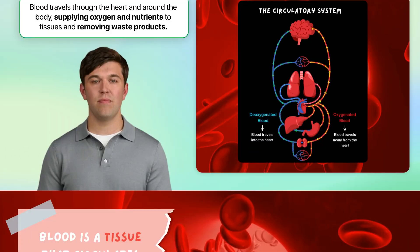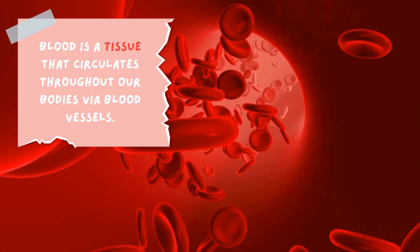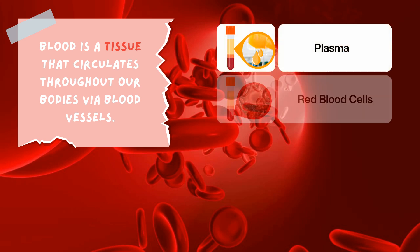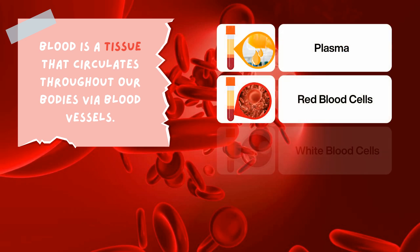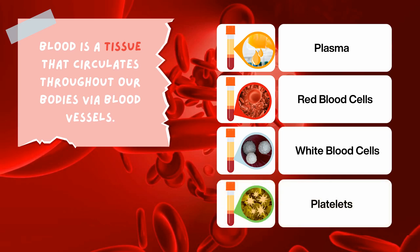Let's get started. Blood is a tissue that circulates throughout our bodies via blood vessels. It performs many crucial functions, primarily involving the transport of various substances. Blood consists of four main components: plasma, red blood cells, white blood cells and platelets. Understanding the role of each component and how they are adapted for their functions is essential.